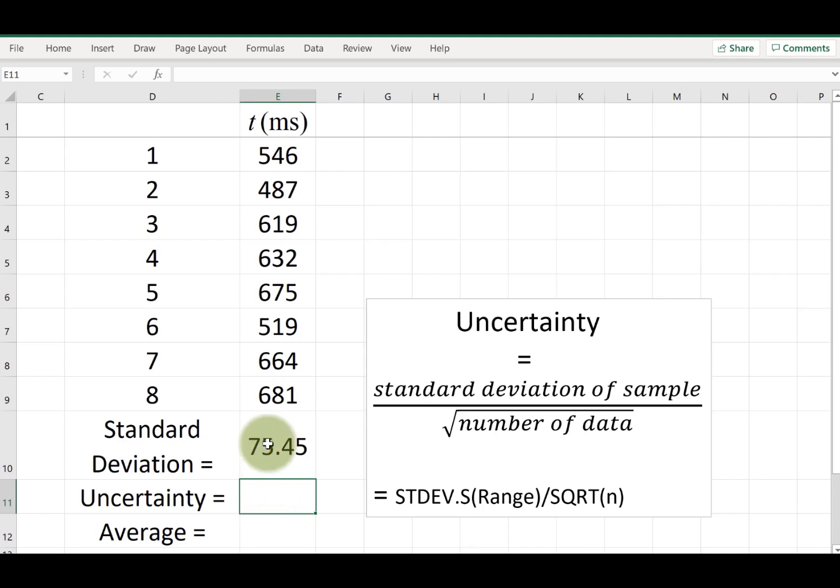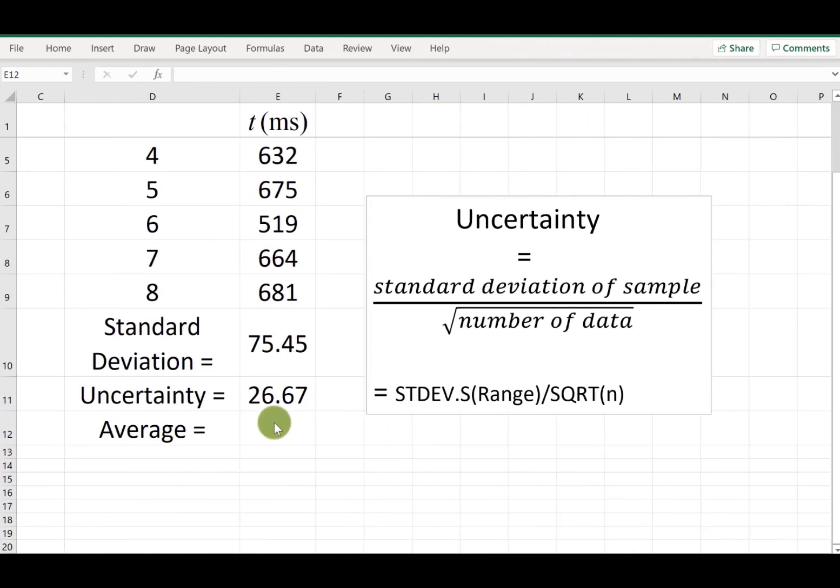Next step is to find the uncertainty from that standard deviation. All I need to do is type equal sign, select the standard deviation I already calculated, and divide that by the square root of the number of data points. In this case we have eight data, so I'm going to be using this number eight. Then close the parenthesis, hit enter, and there is the uncertainty.